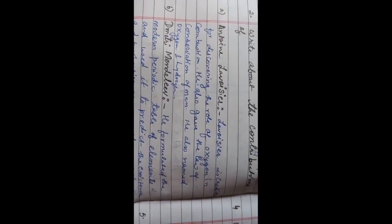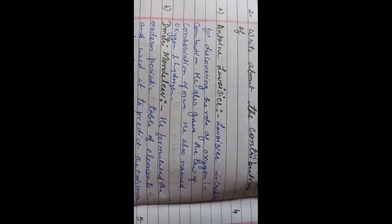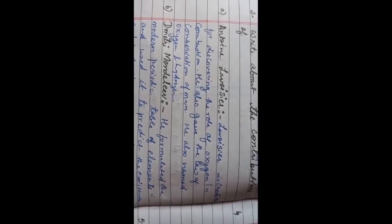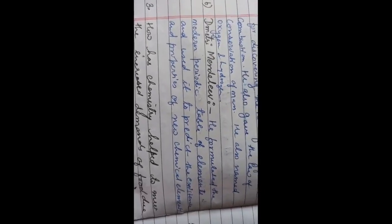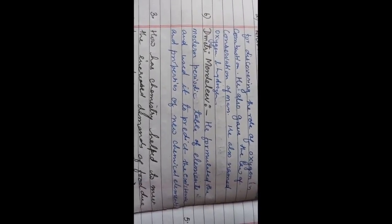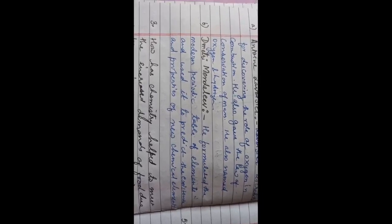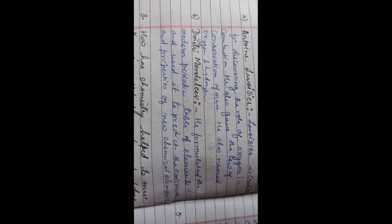Then write about the contributions of Anton Lavoisier. Lavoisier is credited for discovering the role of oxygen in combustion. He also gave the law of conservation of mass. He also named oxygen and hydrogen. Then Dimitri Mendeleev: He formulated modern periodic table of elements and used it to predict the existence and properties of new chemical elements. There is no need to write about the birth and other details. Only what he did. This much you will write.